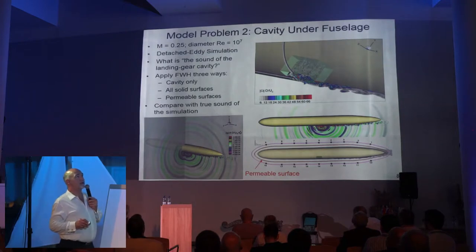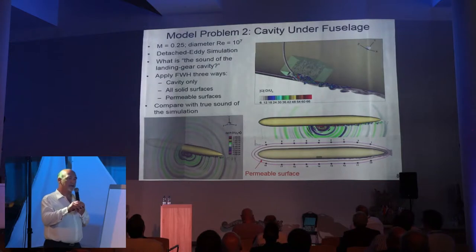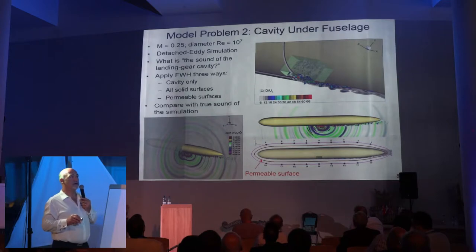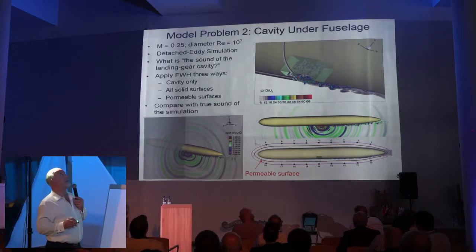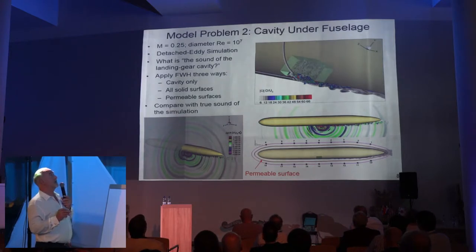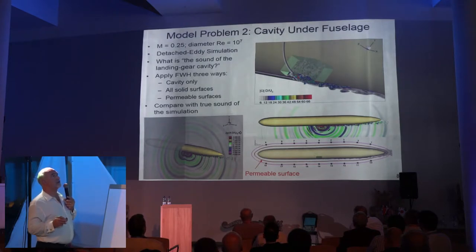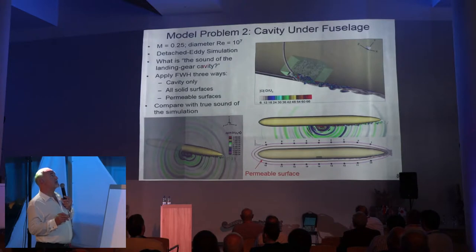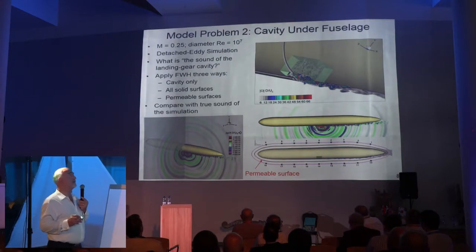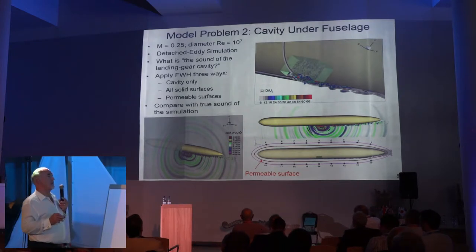The second model problem is a cavity. After the Brazilian work and other Boeing work, I was interested in showing that trying to isolate the noise of the cavity would be really misleading. We have a simulation at Mach 0.25, a large cylinder with a large diameter Reynolds number. It's DES — most of the body is in unsteady RANS mode and the grid is not very fine, while the cavity and turbulence flowing from it are in DES mode. We'll apply Ffowcs Williams–Hawkings three ways: cavity only, all solid surfaces, and permeable surfaces.